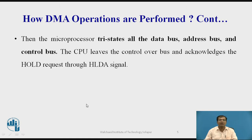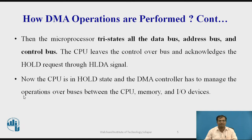Then the microprocessor tri-states all the data bus, address bus, and control bus. The CPU leaves the control over bus and acknowledges the hold request through HLDA signal. Now the CPU is in hold state and the DMA controller has to manage the operations over bus between CPU, memory, and I/O devices.